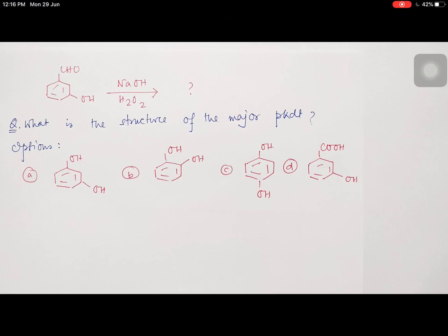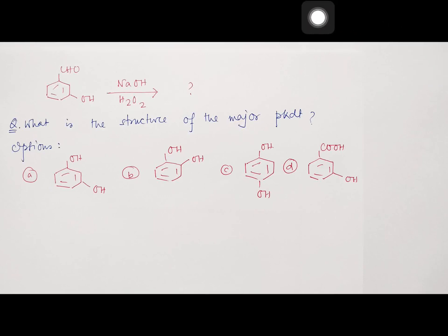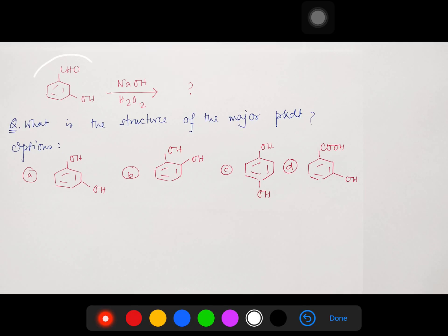Hello students, I am Dr. Tanmay Bishrash. I hope you all are fine. Today we are going to discuss a multiple choice question which you can see on your display — the reaction of 3-hydroxy benzaldehyde with sodium hydroxide and hydrogen peroxide. The question is: what is the major product of this reaction? I have provided four options for you.